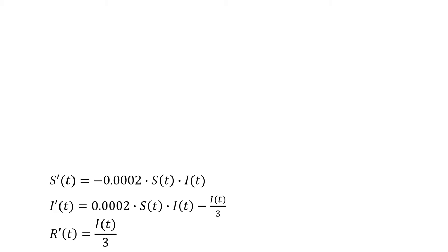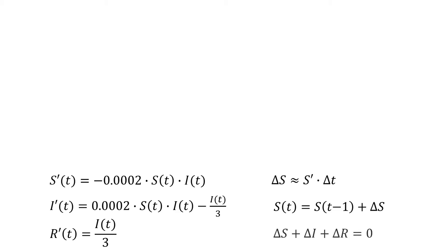We also had a couple of other important relationships. The amount of change in the number of people in a group could be approximated by multiplying the rate by the amount of change in time. We could compute the number of individuals in each group at a particular time value by adding the number of people at the previous time value to the change in the number of people. And since we're assuming nobody is entering or leaving the population, the net change combined is 0. I'm going to rewrite this last equation so that delta I is equal to negative delta S minus delta R.